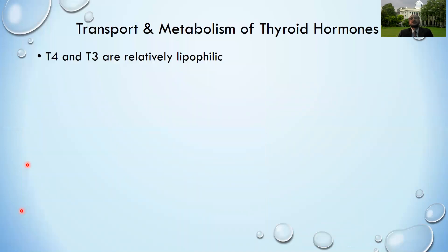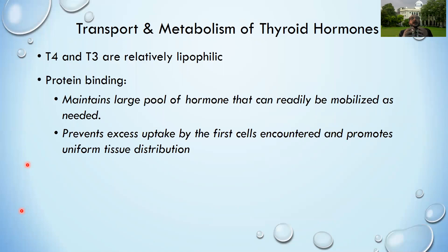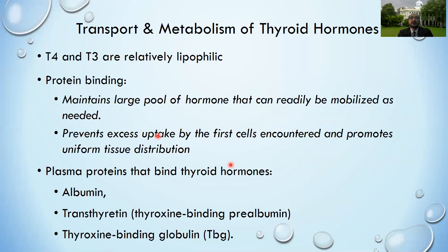In the circulation, the free form of thyroid hormones is always in equilibrium with a much larger protein-bound fraction. These protein-bound thyroid hormones represent a large pool that can be readily mobilized when needed. They also prevent uptake by the first cell encountered, promoting uniform tissue distribution. The proteins involved are albumin, thyroxine-binding prealbumin, and thyroxine-binding globulin.